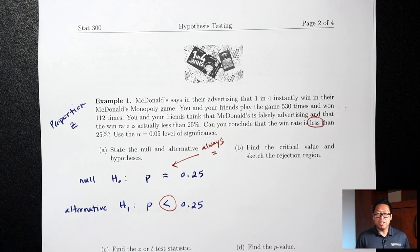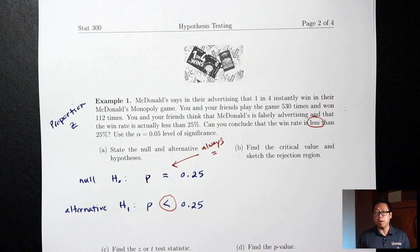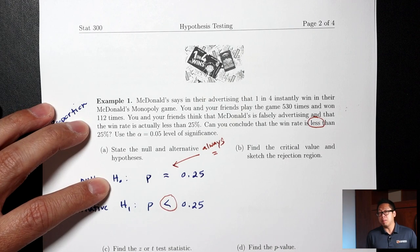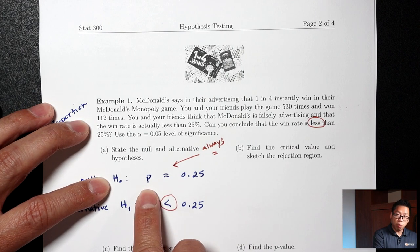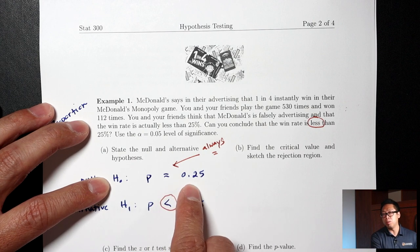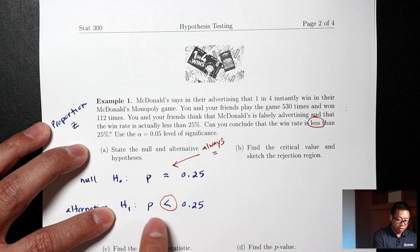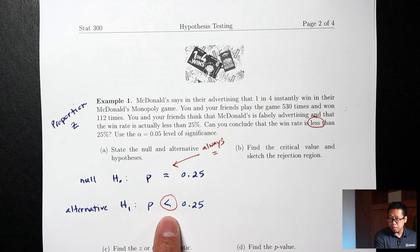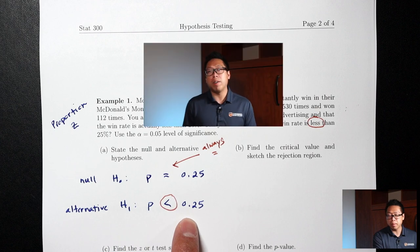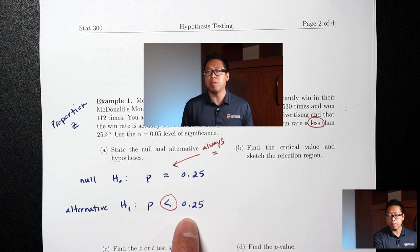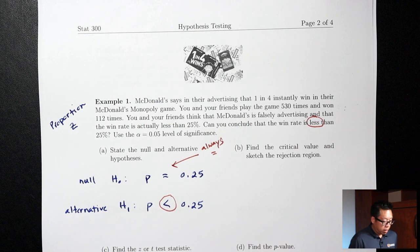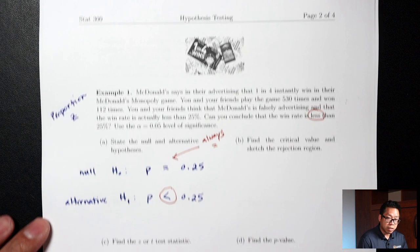H0 and H1 are the two competing explanations from the introduction. H0 is McDonald's explanation — they're not lying, the proportion is actually equal to 0.25. H1 is your explanation — McDonald's is lying and the win rate is actually less than 25%. The goal of a hypothesis test is to decide which explanation is more correct or more probable. We'll skip Part B and come back to it at the end, and move to Part C.